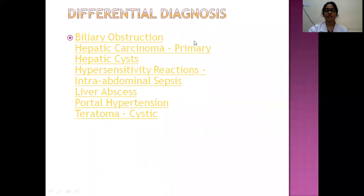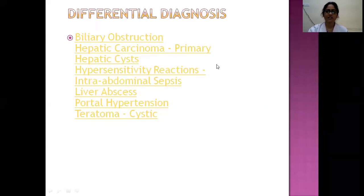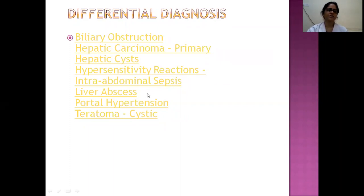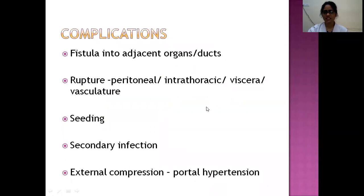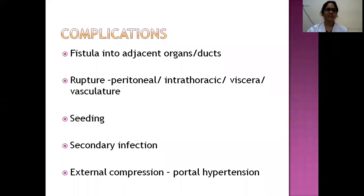Differential diagnosis for hydatid cysts includes biliary obstruction, liver cancer, primary hepatic cysts, hypersensitivity reaction from cyst rupture, intra-abdominal sepsis from secondary bacterial infection, liver abscess, portal hypertension, and teratoma. Complications include fistulas into adjacent organs or ducts — most commonly hepatopulmonary and hepatobiliary fistulas; rupture and seeding into peritoneal or intrathoracic cavity or neighboring viscera; secondary hydatidosis; secondary bacterial infection and sepsis; and portal hypertension from external compression.